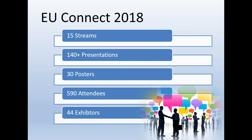We have over 15 streams including application development, analytics, statistics, code and tips, and some new ones this year. We have over 140 presentations and 30 posters, and as of last count there were 590 attendees. We currently have 44 exhibitors. Something people may not give much thought to is that approximately 200 people are involved in making this happen — committee members, the back office, supporters, presenters, and delegates. All together we make for these exciting conferences year after year.